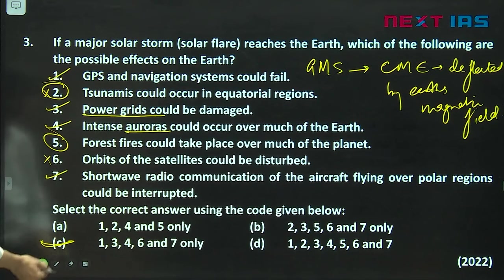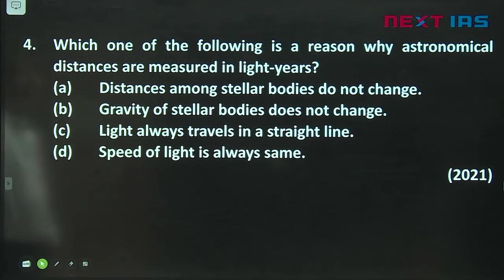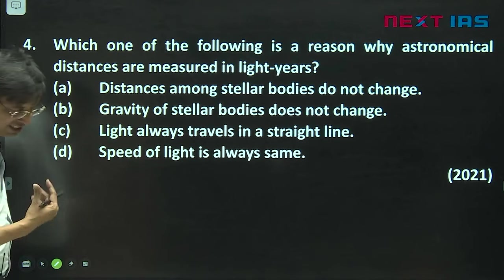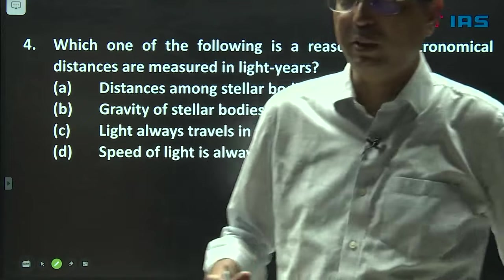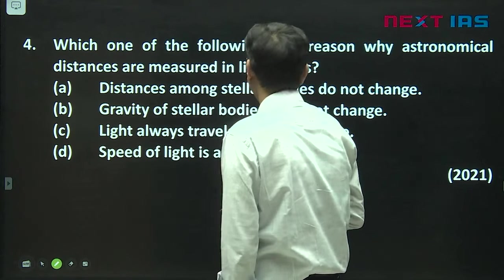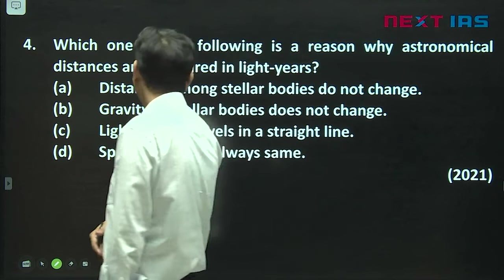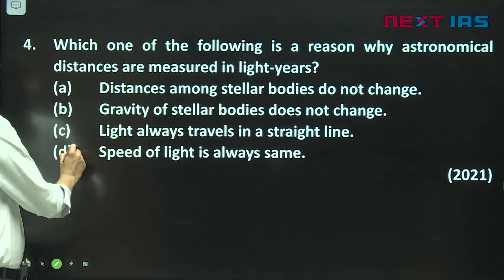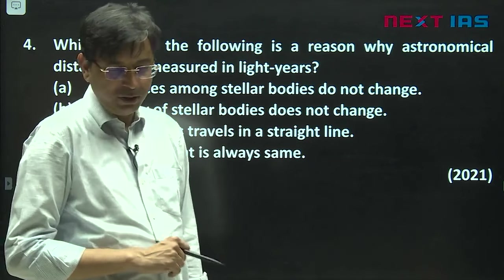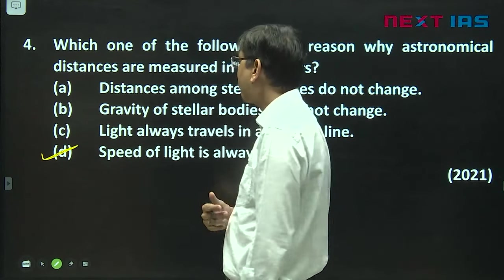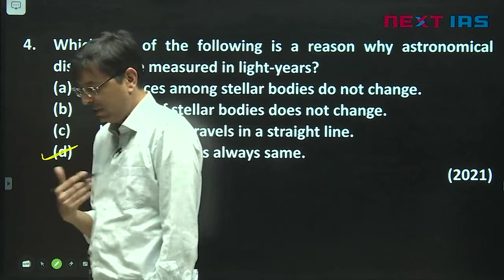Let us move to the next question. Which one of the following is the reason why astronomical distances are measured in light years? You all know the distance we measure is in light years. This is a very straightforward answer. Distance among stellar bodies do change because there is expansion of the universe, and that expansion of universe is because of dark energy. Gravity of stellar bodies does not change, again that is also not the reason. Speed of light is always same. Light travels in a straight line. Yes, light travels in a straight line, but the thing is the speed of light is always same. This is the answer. Why we measure distance? It is because the speed of light is same. That way we are able to arrive at a correct estimation of the distance.